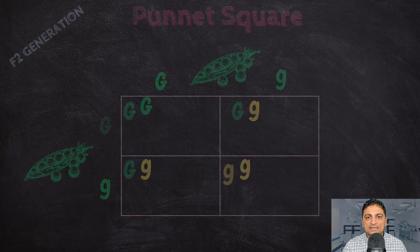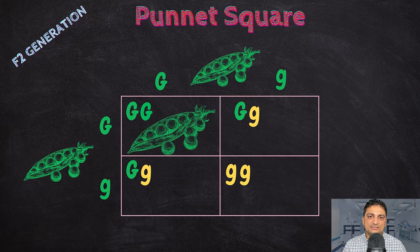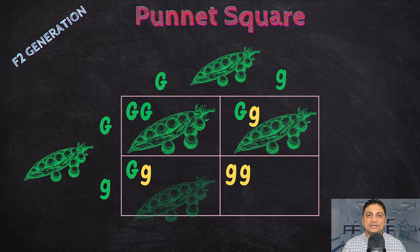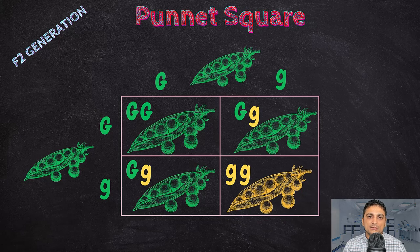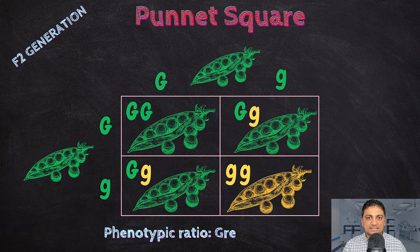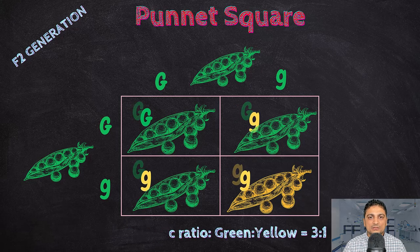Since three offspring carry the dominant allele uppercase G, which governs the green color, three individuals out of four will be green in color, and only one individual which has both recessive alleles lowercase gg will be yellow. This is the monohybrid cross of a specific trait in peas, and by using the laws of inheritance and a Punnett square we can analyze different traits and identify the potential outcomes of the offspring.